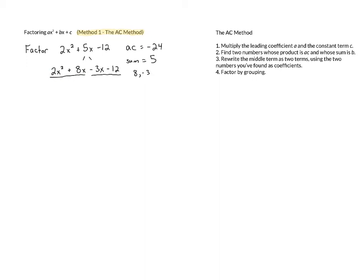For the first group, 2x squared and 8x share a 2x in common, and when we pull that out, the leftovers are x plus 4. Then in the second group, negative 3x and negative 12 have a common factor of negative 3, and when we pull that out, again, we have x plus 4 as the leftovers.